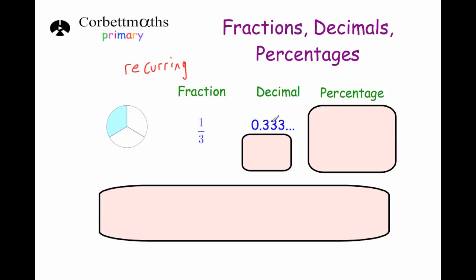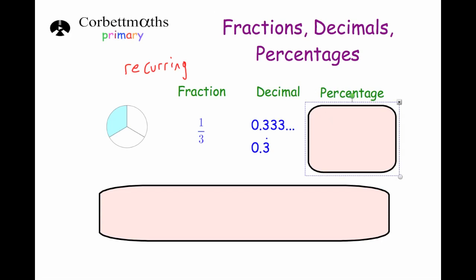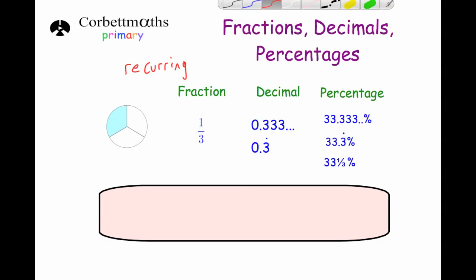I'd write 0.3333333 with three dots to show it carries on. There's another way: write 0.3 with a little dot above it — that's the recurring symbol. Putting it above the repeating digit means 0.333333 and so on. It's important to spot it because it's not the same as 0.3. Since the decimal goes on forever, the percentage also goes on forever: 33.333333% and so on. You could write 33.3 with a dot above the 3 percent.